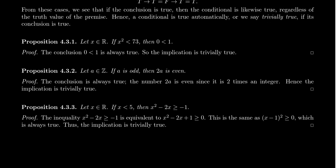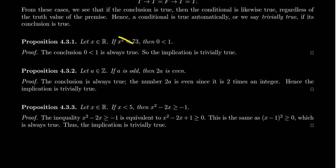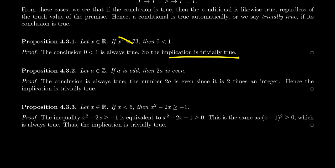Let me show you some examples. Take any real number x. If x² is less than 73, then 0 is less than 1. Depending on your choice of x, x² may or may not be less than 73. But regardless of this, when you look at the conclusion — 0 is less than 1 — the conclusion is always true. And therefore the implication is true.